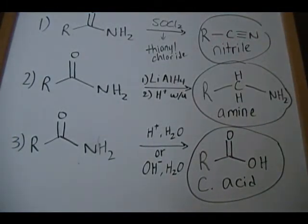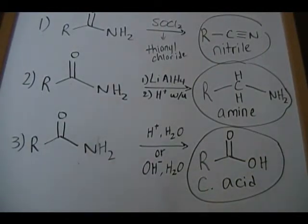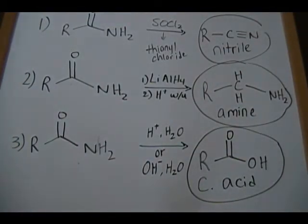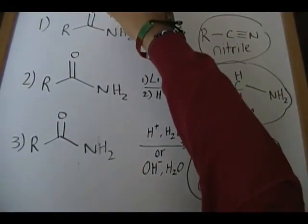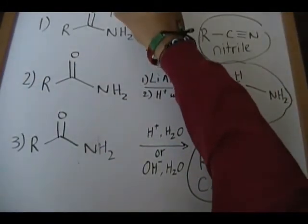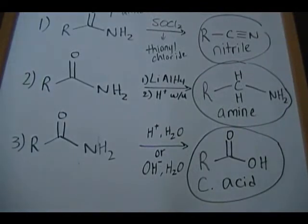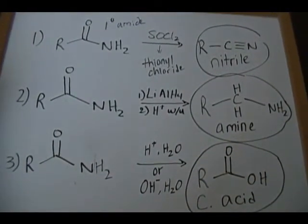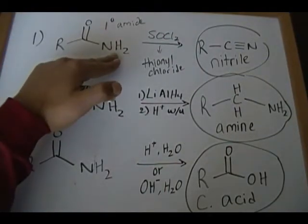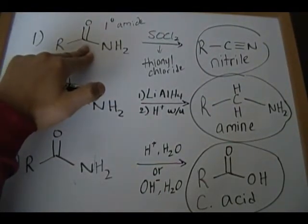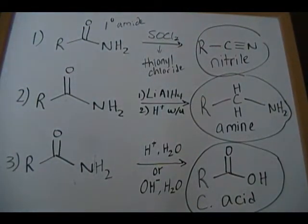Let me do a quick run-through of all three reactions. First reaction: you have a primary amide — it has to be primary — reacting with thionyl chloride to give a nitrile. To draw the product: get rid of the double-bonded oxygen, get rid of the two H's, and increase the bond between carbon and nitrogen by two extra bonds, giving you a triple bond — a nitrile.